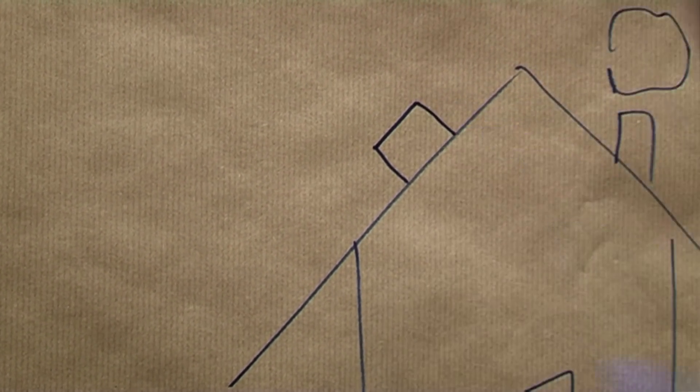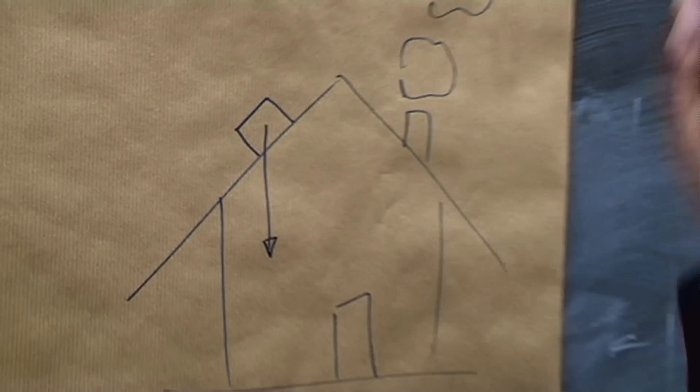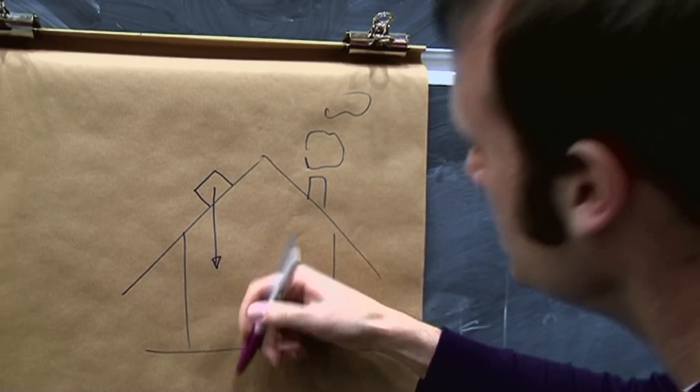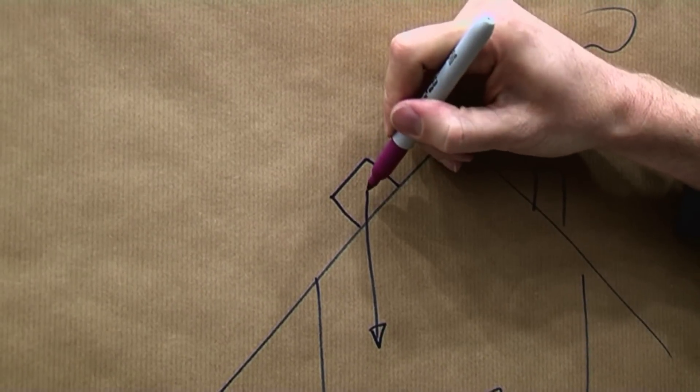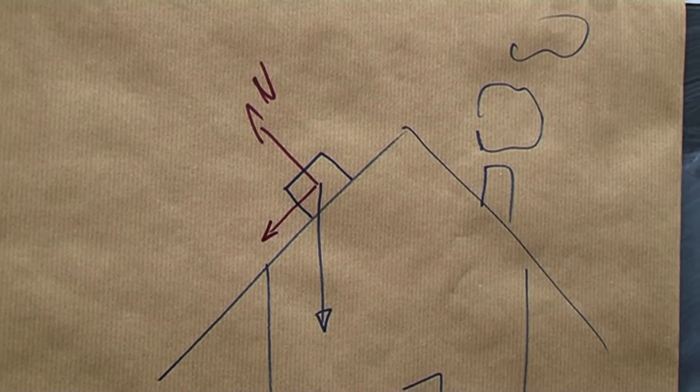Gravity is forcing the cat directly down. But of course it can't go straight down because it's on a sloped roof. And so you're gonna split this into a normal vector, which comes off this way, and then the vector going down the roof.